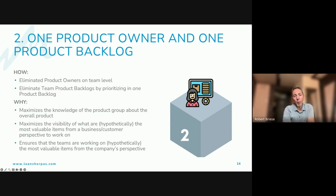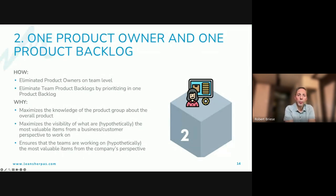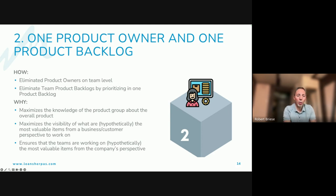At SAP we started with team backlogs and team product owners, and we moved away from that by creating a clear transparent order between all the items across all those team backlogs, creating one general product backlog. This ensures there is no team working on items that are less important from the overall perspective. Otherwise you create local optimization — teams work on items that from their perspective are very important, but from the overall product perspective may not be.